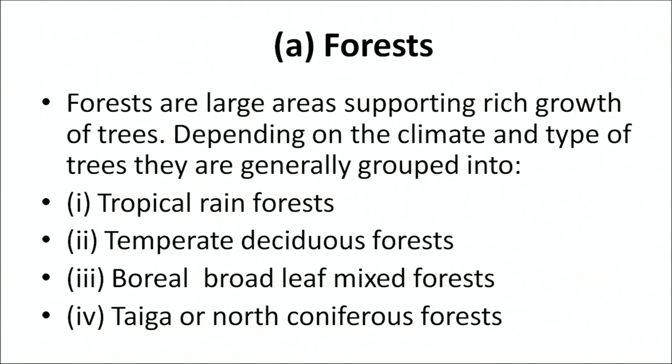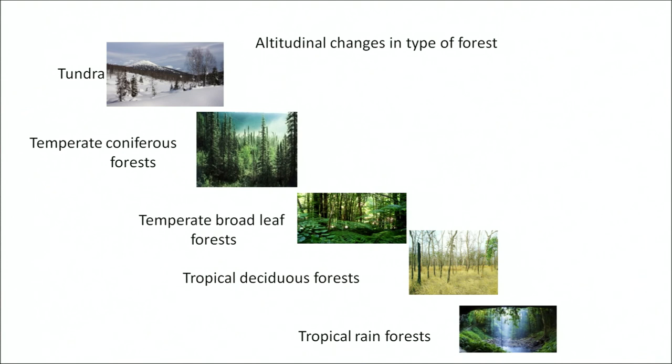Now let us learn about the forests of India. Forests are large areas supporting rich growth of trees depending on the climate, and the type of trees are generally grouped into tropical rainforests, temperate deciduous forests, boreal broadly mixed forests, and taiga or the north coniferous forests. This figure shows the altitudinal and latitudinal variation in the distribution of forests, representing a change from the tropical rainforests towards the alpine and polar tundra forests.